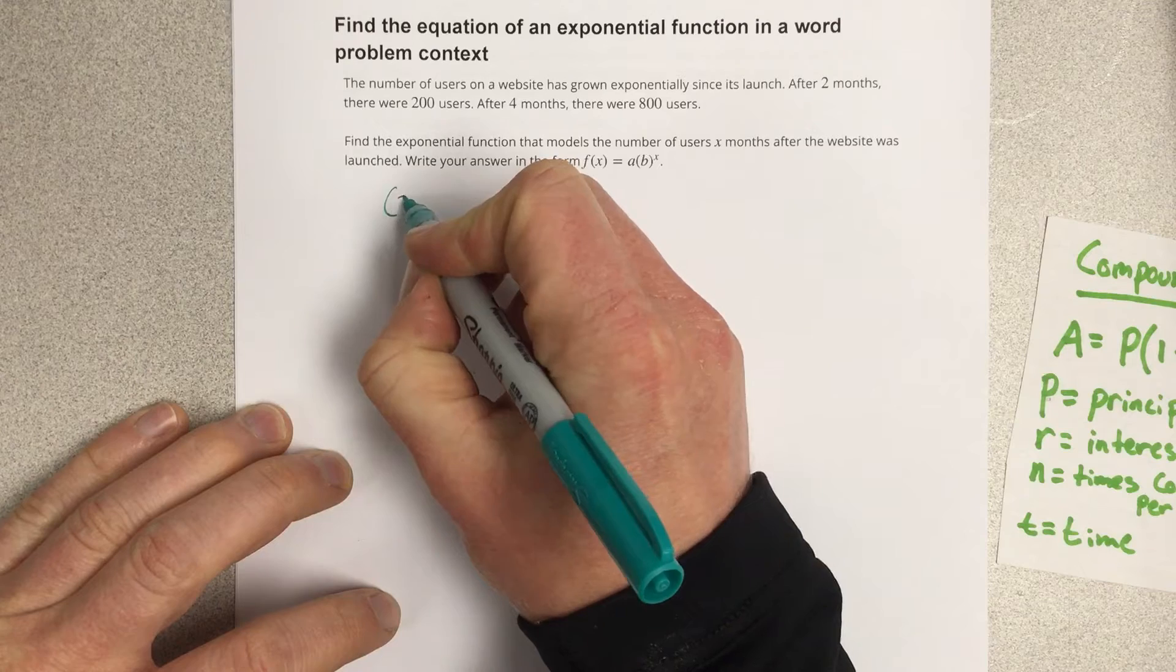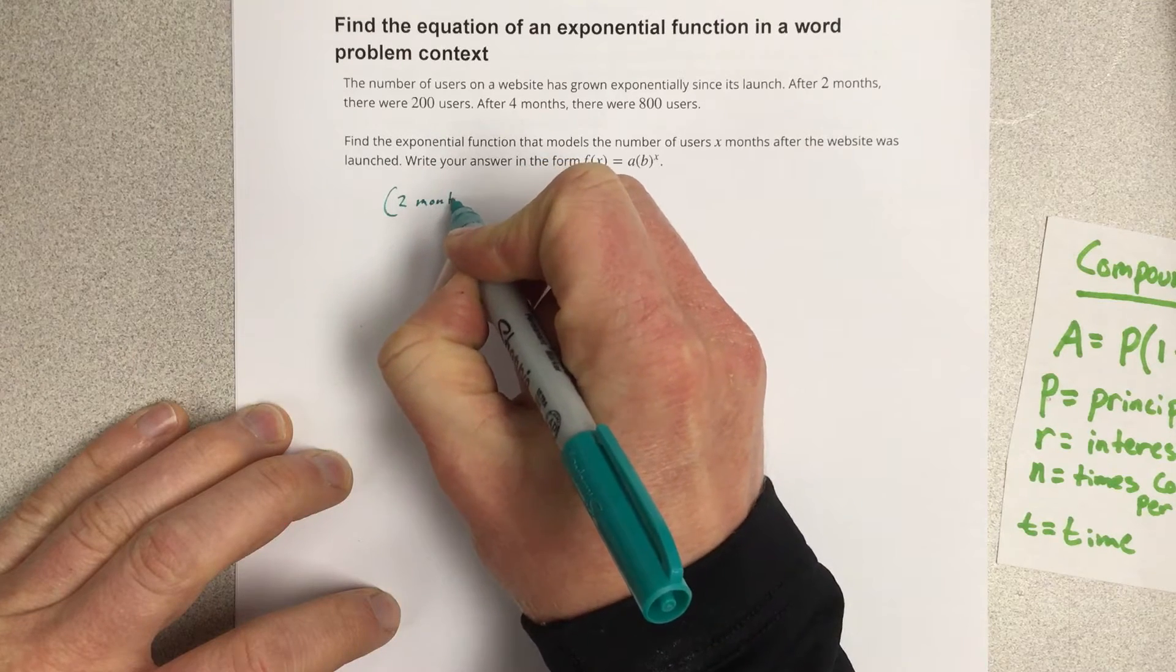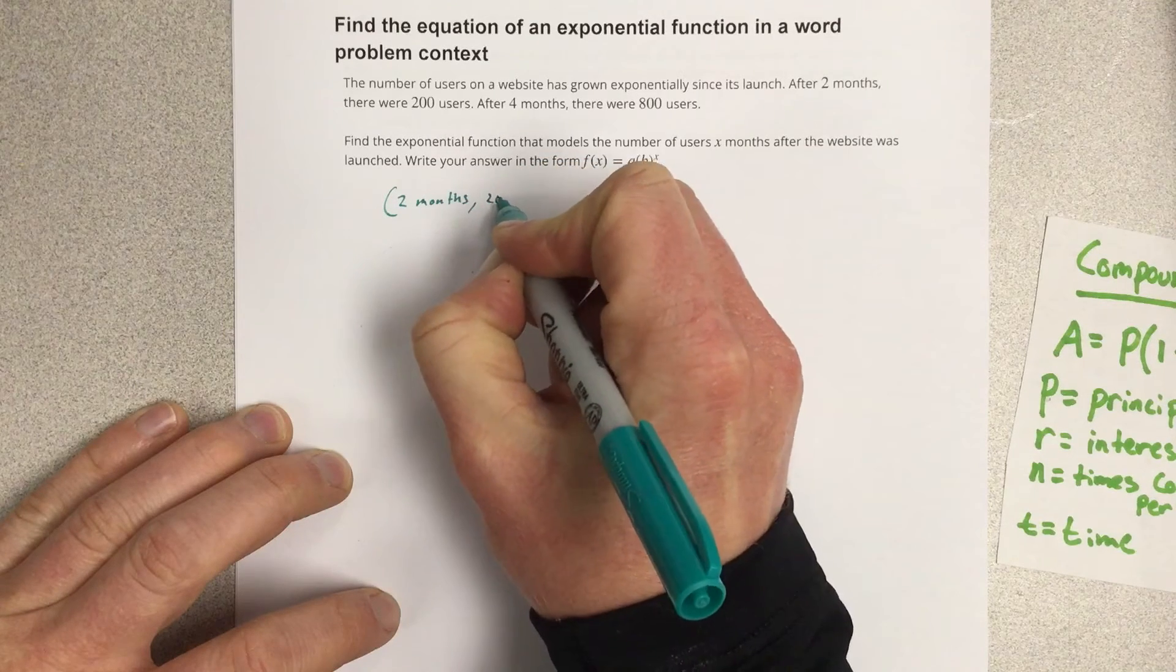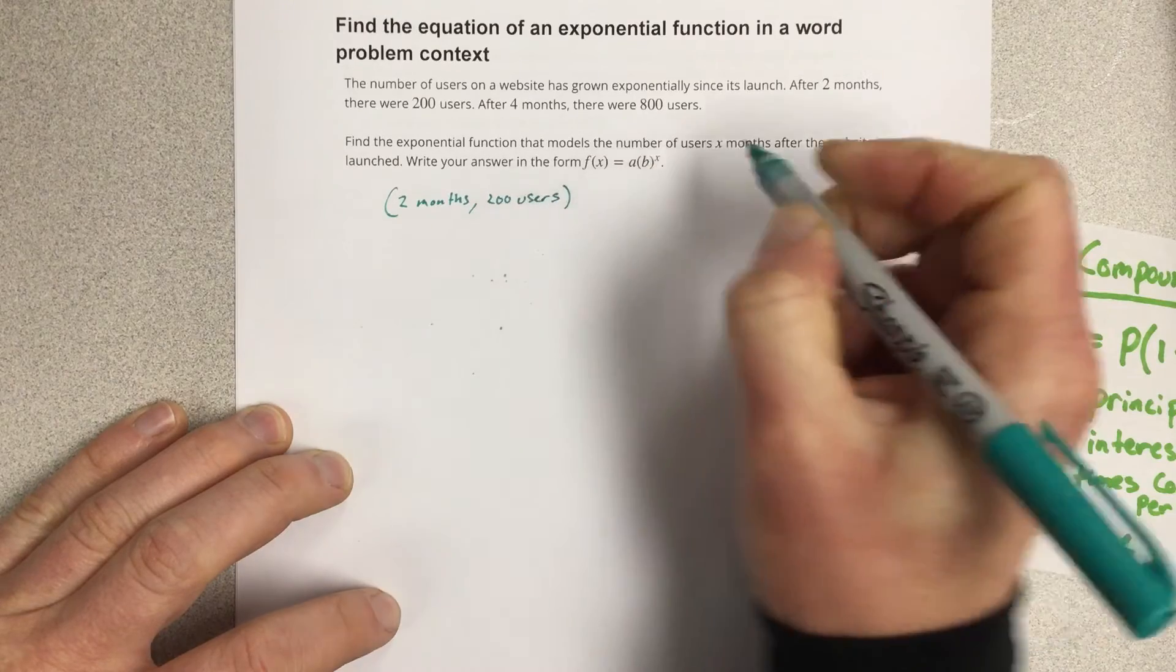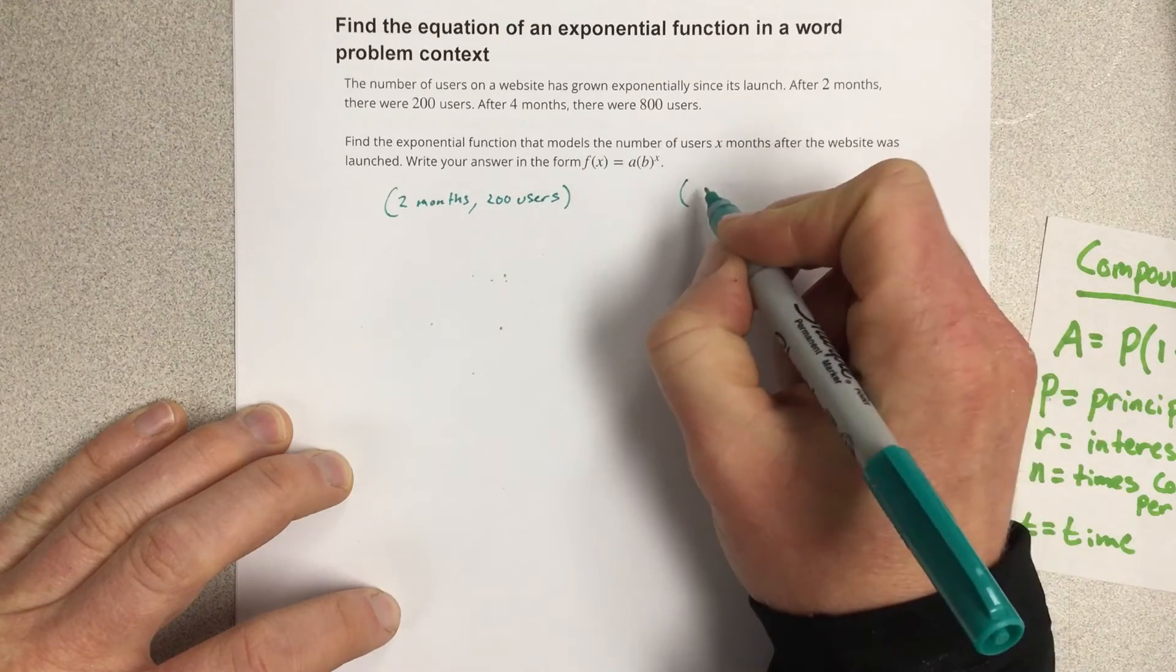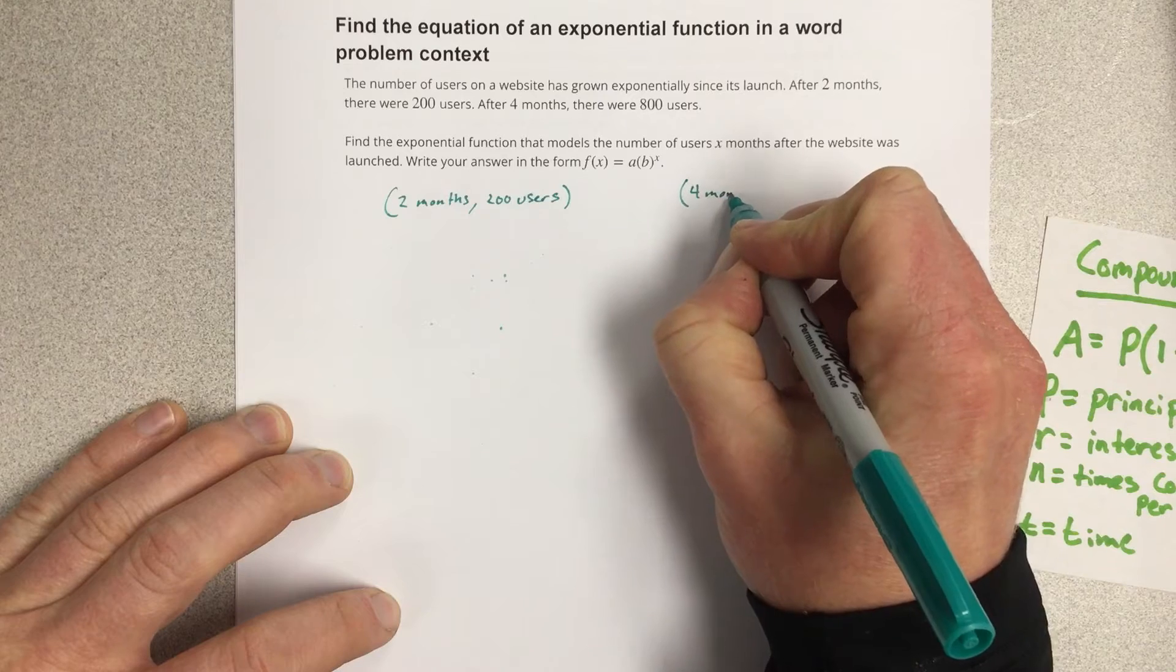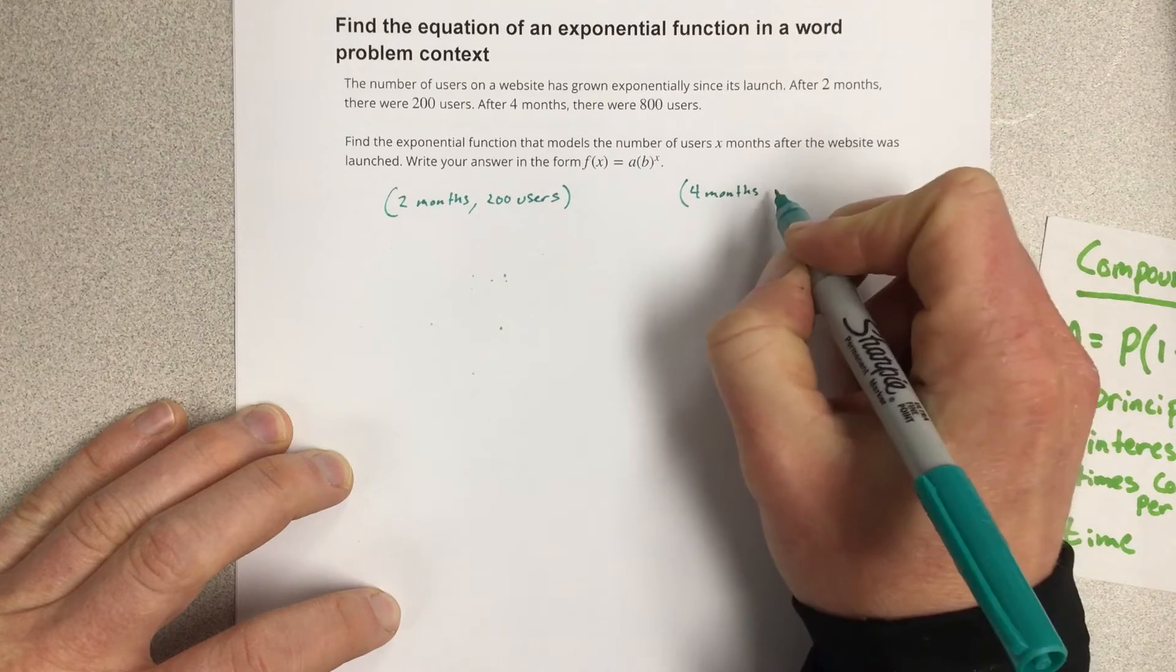So that gives you two coordinates. Two months, comma, 200 users, and four months, 800 users.